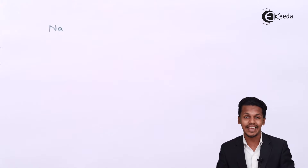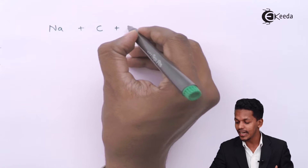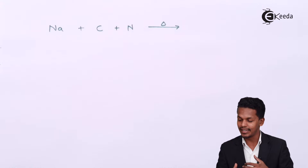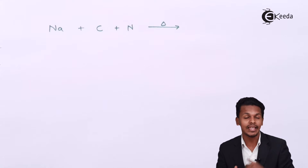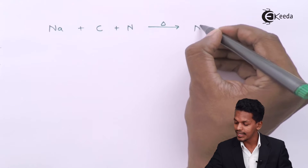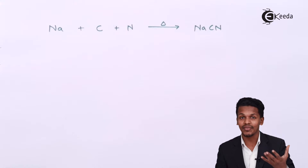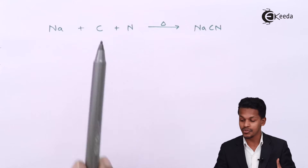Suppose the organic compound used in the sodium fusion test contains nitrogen. The sodium will react with the carbon already present in the organic compound as well as with the nitrogen. During the tremendous heat, sodium reacts with nitrogen along with carbon to produce sodium cyanide (NaCN). This ionic compound is then used to detect whether nitrogen is present or not.